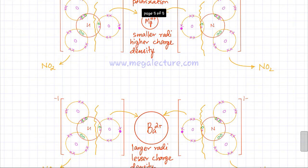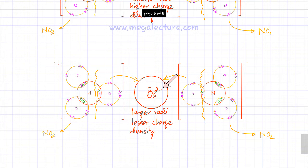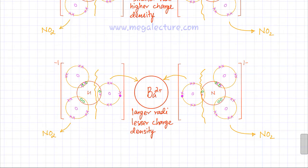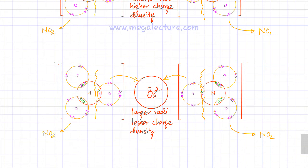On the other hand, barium nitrate has a much bigger ion with lower charge density. So the attraction for the electrons in the nitrate is not going to be very strong — the electrons would not be very strongly attracted. Therefore, the barium ion is going to cause less polarization of the nitrate ion compared to Mg²⁺, and there is less polarization as you move down group 2.